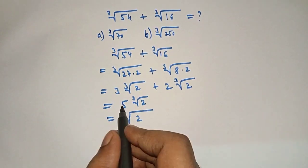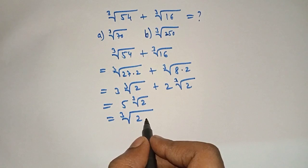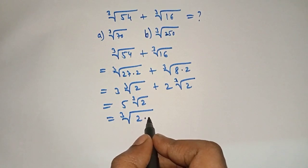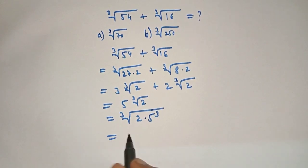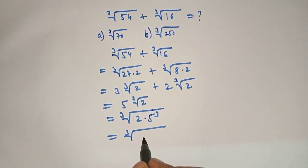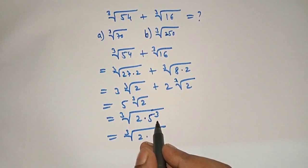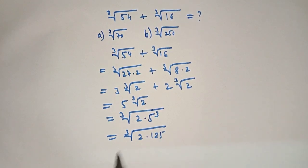To take 5 under the cube root, we have to multiply 2 into 5 raised to 3. Now cube root of 2 into 5 raised to 3 is 125, which will be equal to cube root of 250.